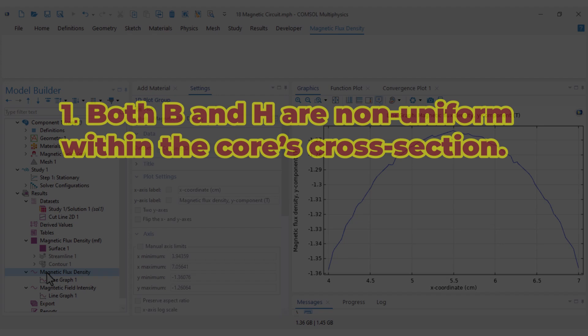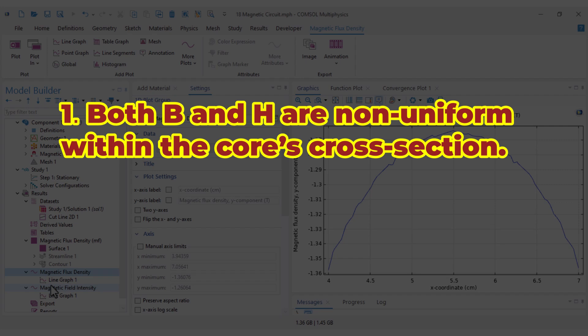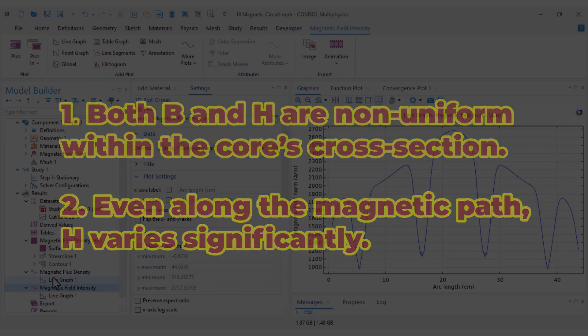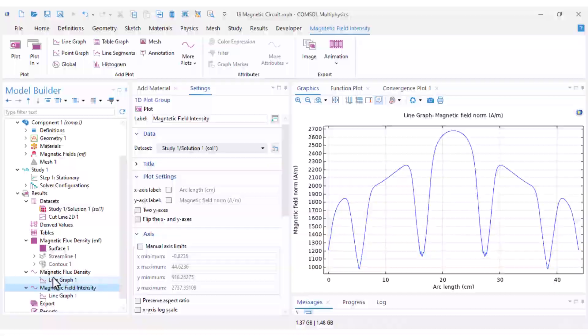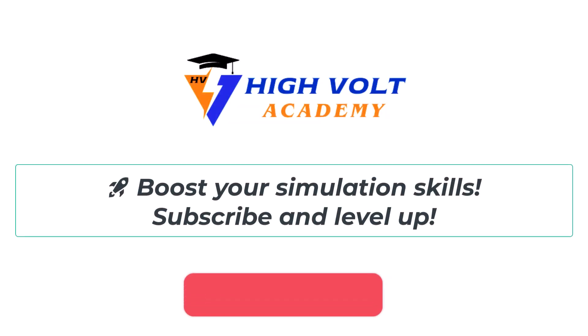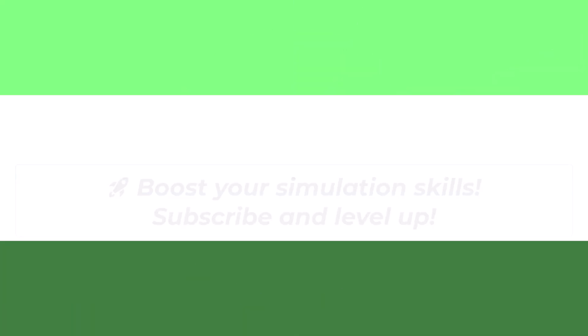So we've confirmed two things: first, both B and H are non-uniform within the core's cross section. Second, even along the magnetic path H varies significantly. That's exactly what analytical simplifications often ignore, and we'll see the impact of that in a moment.